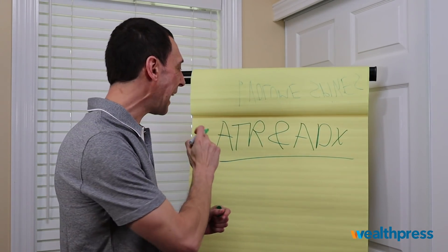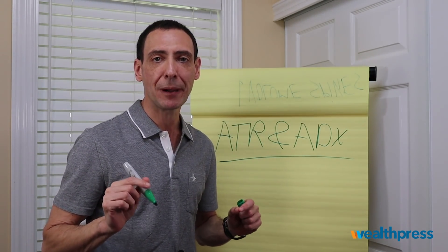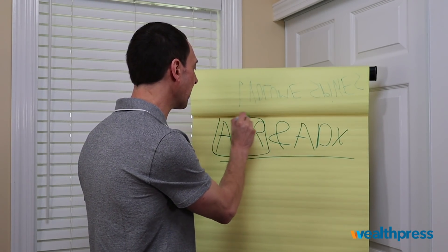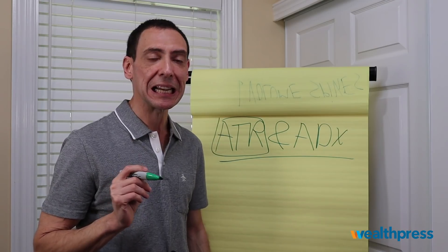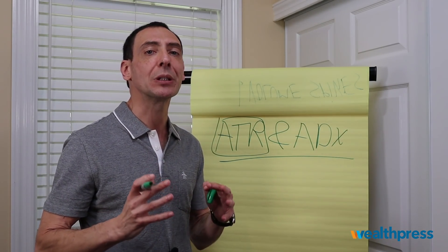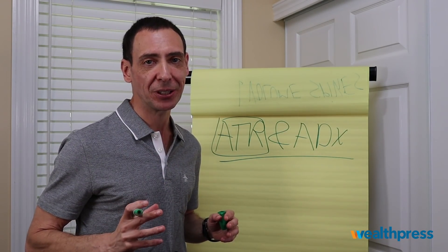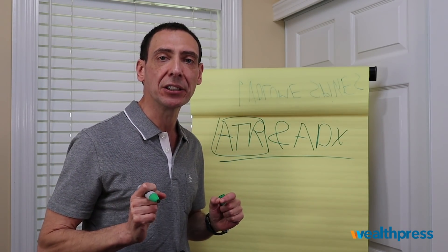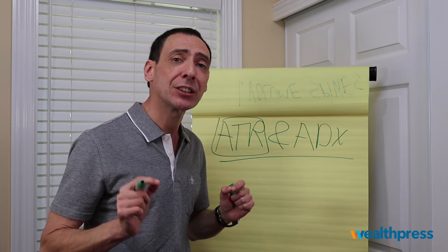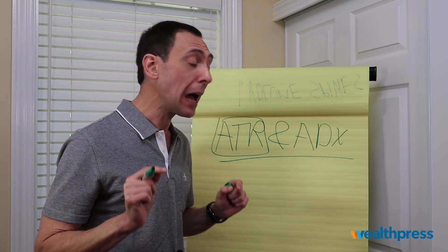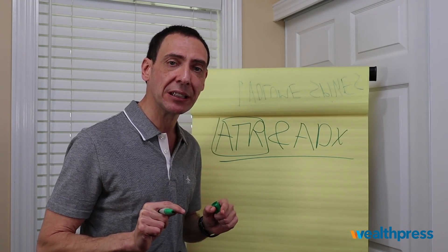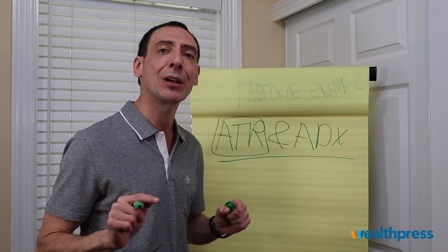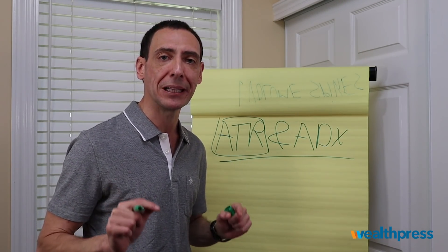I understand that they sound very similar, and a lot of traders might find them confusing. But the ATR indicator actually measures volatility — it has nothing to do with actually measuring market action. While the ADX indicator is one of the best indicators for momentum, and that's what we're going to talk about in today's video. I'm going to get deep into the ADX indicator and explain how it works, how you can benefit from it, and how it can help you pick strong momentum-driven stocks.